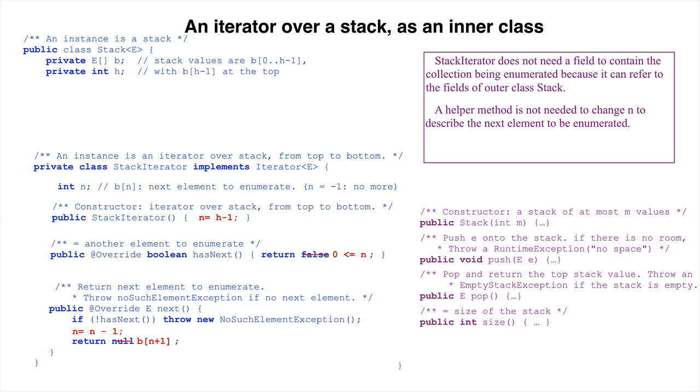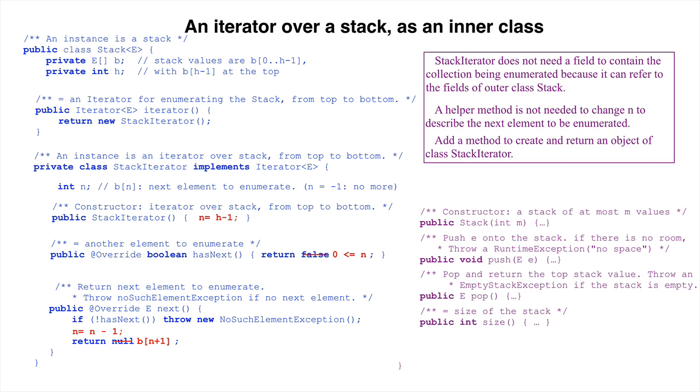Now the iterator implementation is complete. But there is still one issue. Because class stack iterator is private, users cannot access it. To solve this and make it easy for the user to obtain an instance of stack iterator, we insert a method for it. The method simply creates a new object and returns it. This is why it is okay to make class stack iterator private.